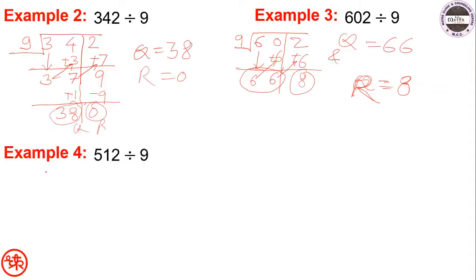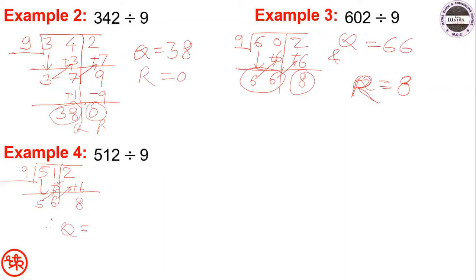Next example: 512 divided by 9. Draw horizontal line before unit digit. Write 5 below 5, add 5 to get 6, add 6 to get 8. Since 8 is smaller than 9, quotient equals 56 and remainder equals 8.